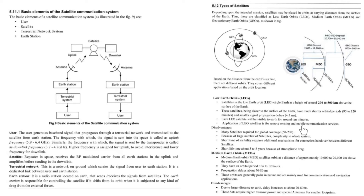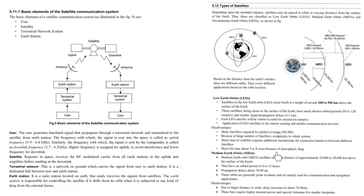The disadvantages of LEO satellites are that many satellites are required for global coverage, around 50 to 200. Because of this large number, the complexity of the whole system increases. The short time of visibility requires additional mechanisms for connection handover between different satellites. LEO satellites also have a short lifetime of about 5 to 8 years due to atmospheric drag.